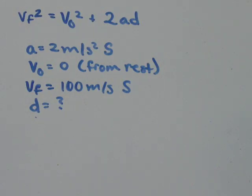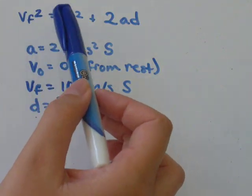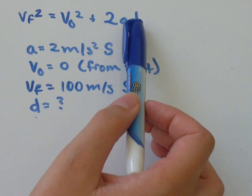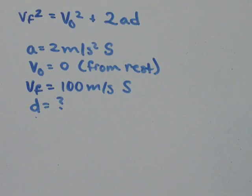What you might notice about this formula is that there's no variable T in it. So if you're given a question, you're asked to solve for the final velocity, initial velocity, acceleration, or distance, and you're not given time, this might be the formula you want to choose.